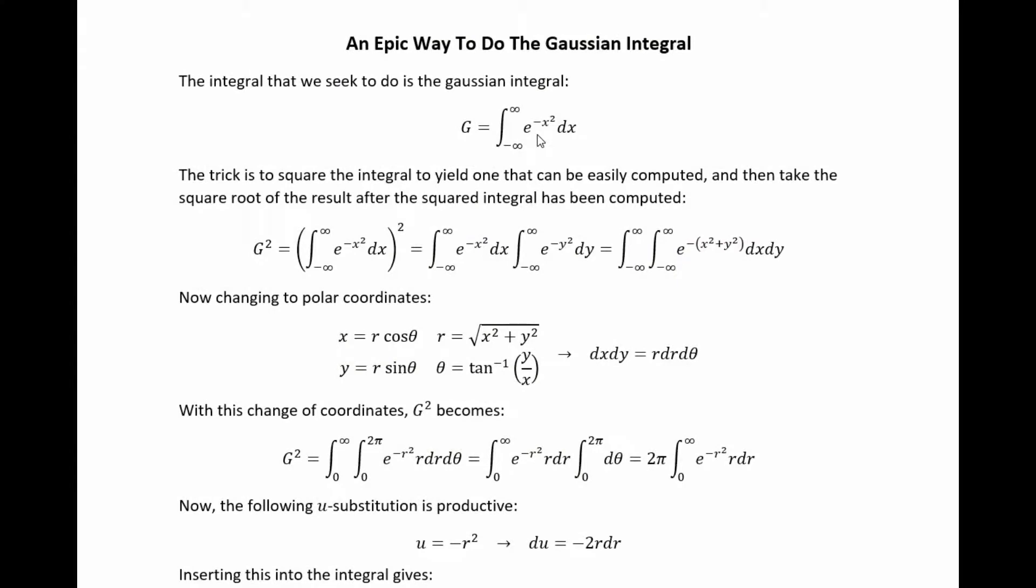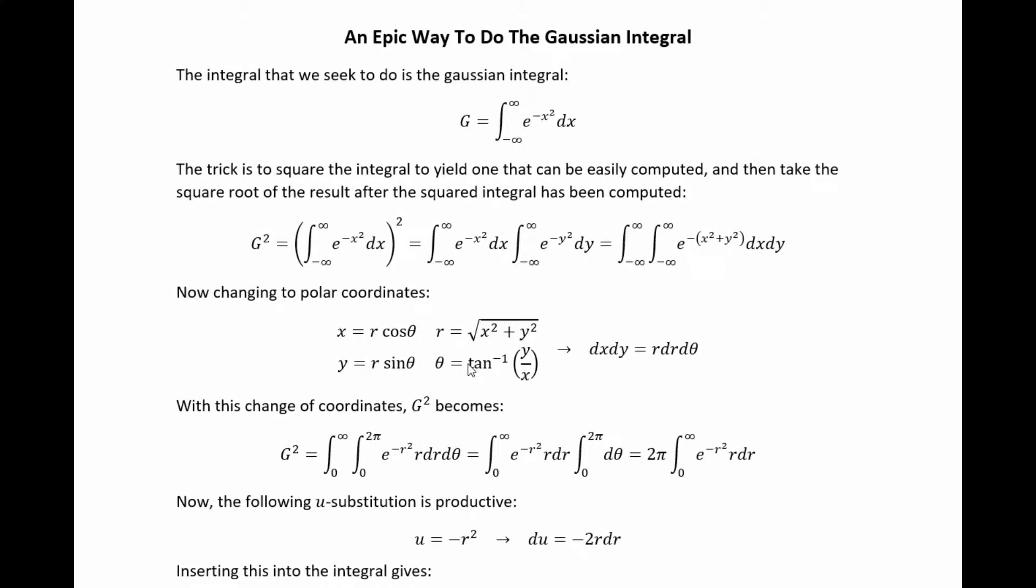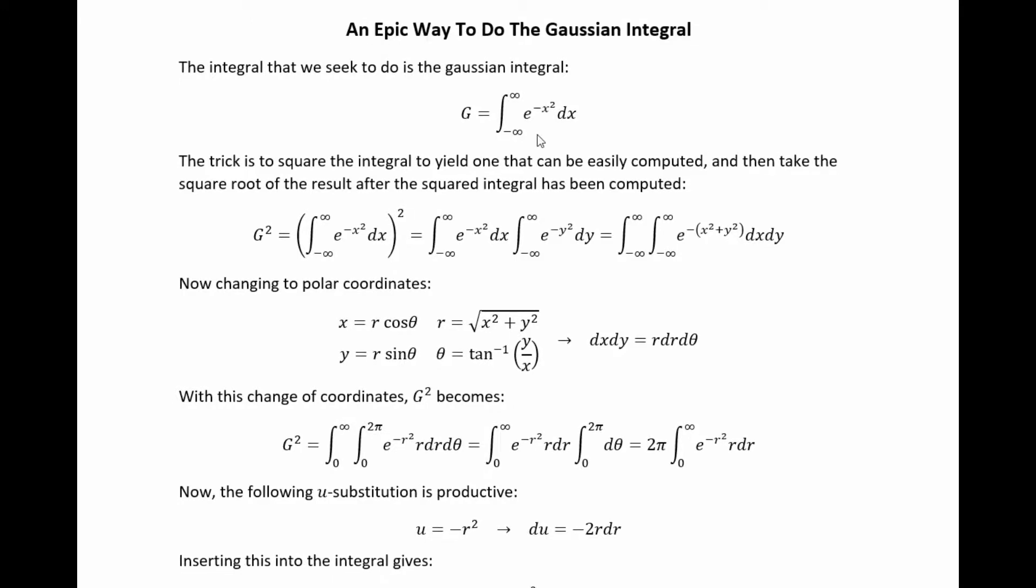This is the famous Gaussian integral. This is the integral we want to do. And because you can't just simply write out an anti-derivative, doing this integral is definitely not obvious. But it turns out you can still do it with nothing but the skills you would learn in an elementary calculus class. So let's take a look at just what cleverness allows us to pull off this integral. It turns out that if you square it and then change coordinates on the integral, you can actually arrive at an integral that's doable.